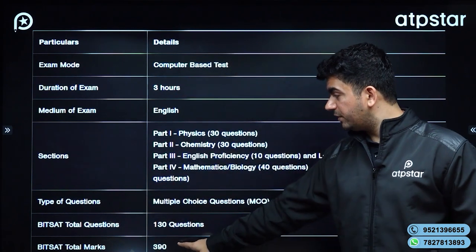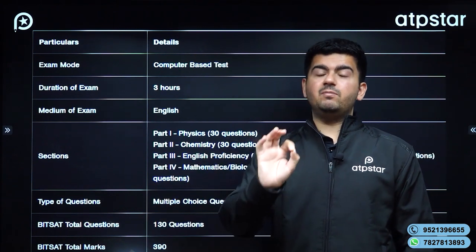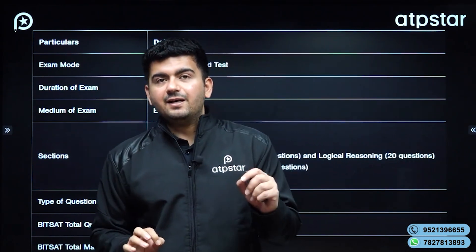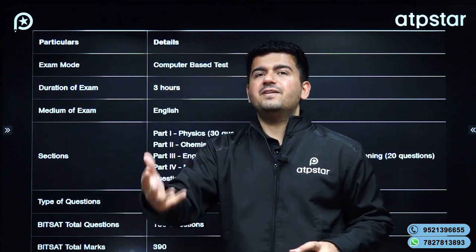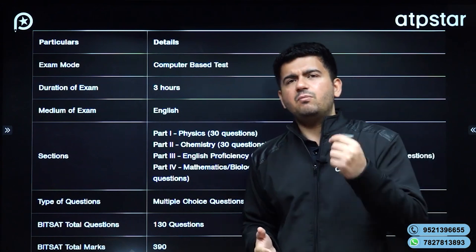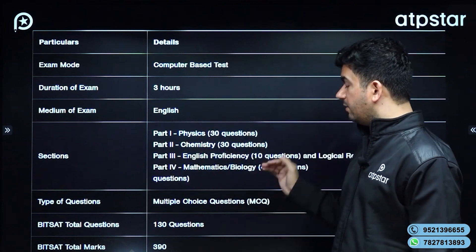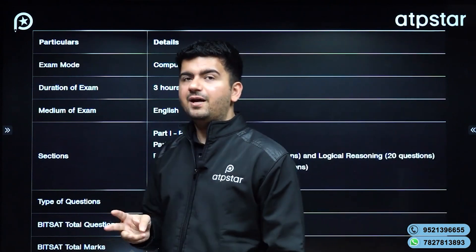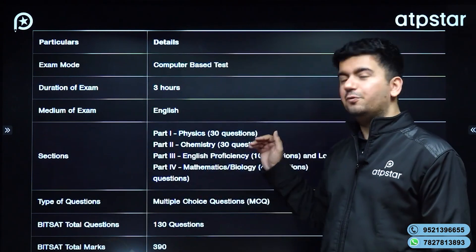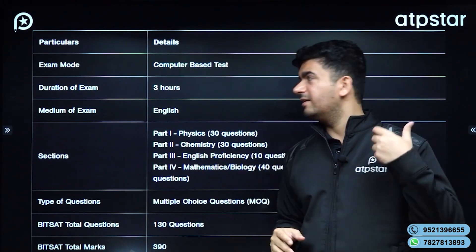The maximum score possible is 390. If a student is able to attempt all 130 questions, then only will they get access to the bonus questions. In the bonus questions as well, there will be negative marking. A student cannot go back to the previous section once all the questions are attempted and they have started the bonus questions. The key point is Section 3, which has an English proficiency section and a logical reasoning section — 30 questions total. Section 3 is very important for your selection as well as a very good rank.